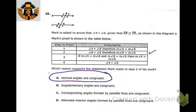For step two: why would the measure of angle 8 be the same as the measure of angle 6? You can tell they're right across from each other — they're vertical angles — and we know those are congruent.